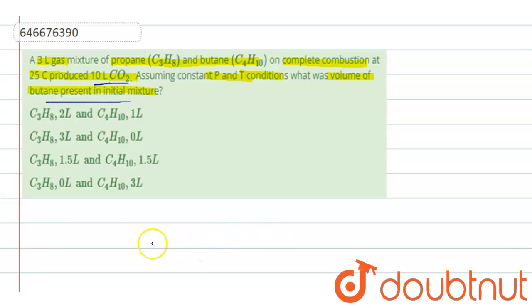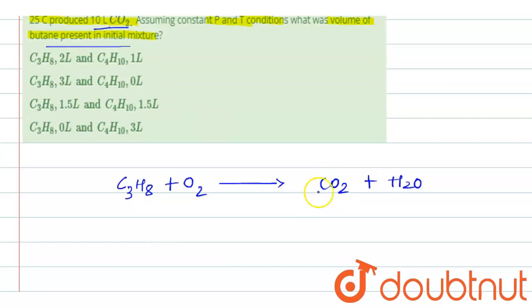First, let us write the combustion reaction of propane and butane. Propane C3H8 on combustion, that is heating in presence of oxygen, it will form carbon dioxide and water. So balance this reaction. It will be 3CO2 and 4H2O. Therefore, oxygen will be 5O2.